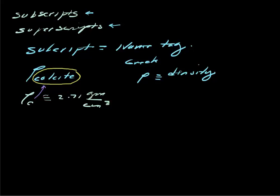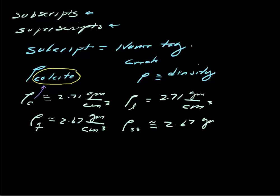We could also use this as a density for limestone, which is composed primarily of calcite. Also, for example, you might have quartz, and we know that its density is approximately 2.67 grams per cubic centimeter. We might also often see sandstone as having an approximate density of 2.67 grams per cubic centimeter.